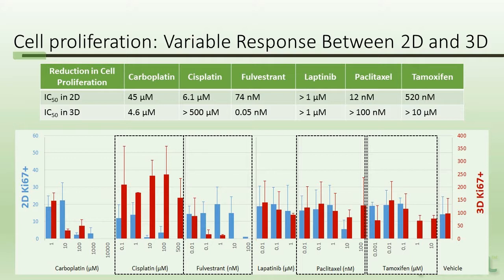The 3D cell culture models in red show a very significant effect for Fulverstrand, whereas the 2D cell culture models in blue show only a very minimal effect of Fulverstrand. The opposite is seen with cisplatin, where the effect with our 2D cell culture models is very high, but the effect with our 3D cell culture models is barely noticeable. So we're seeing a differential response based upon 2D versus 3D, and the expression of biomarkers is very different between 2D and 3D with the exact same cell line.